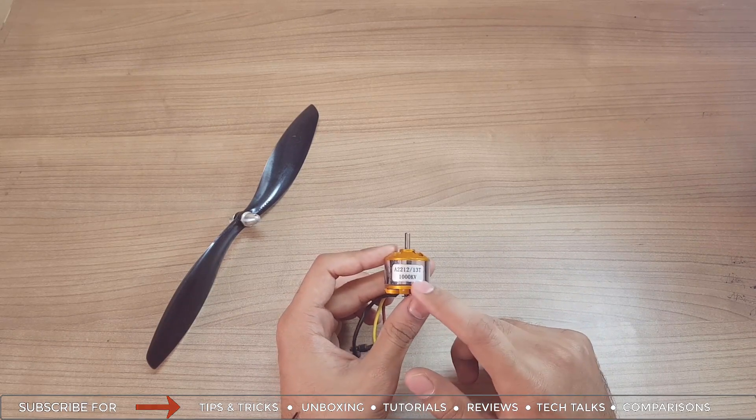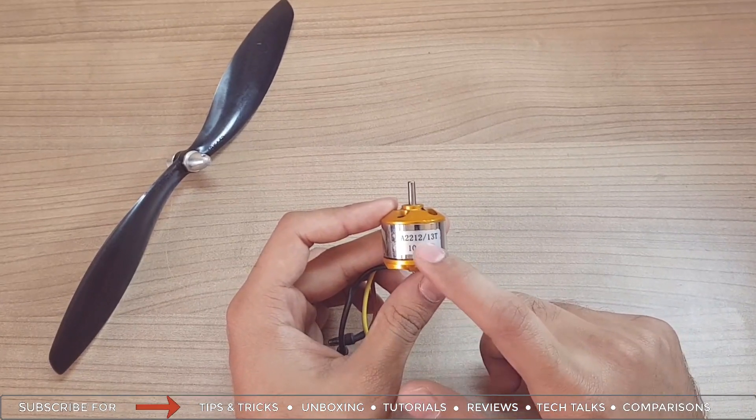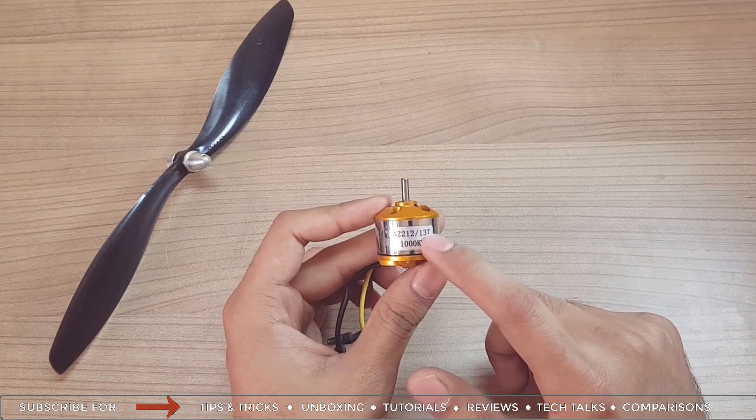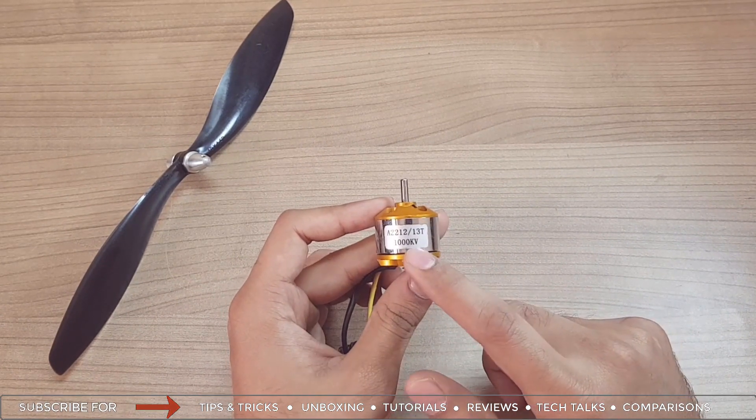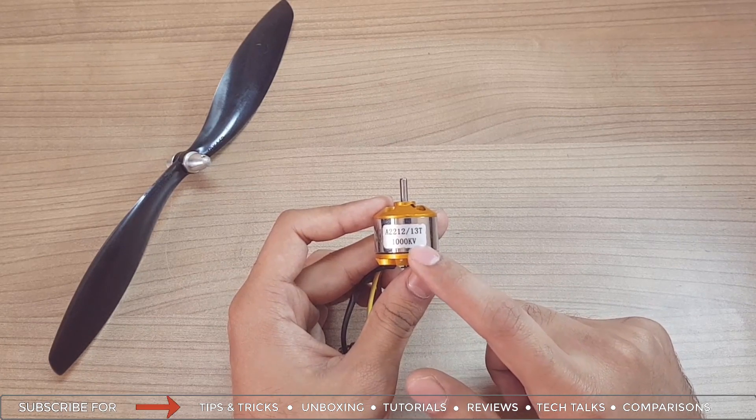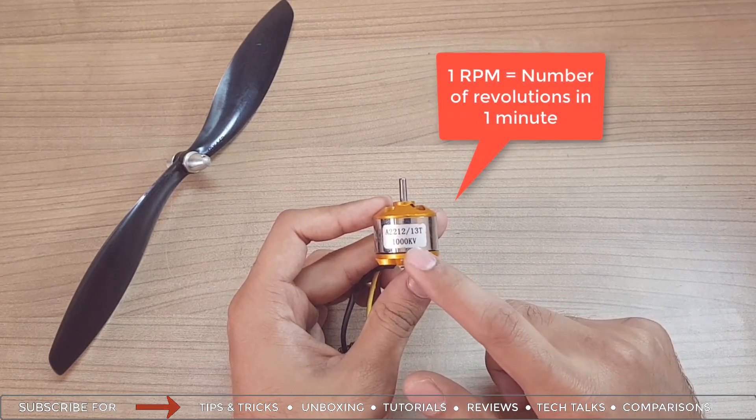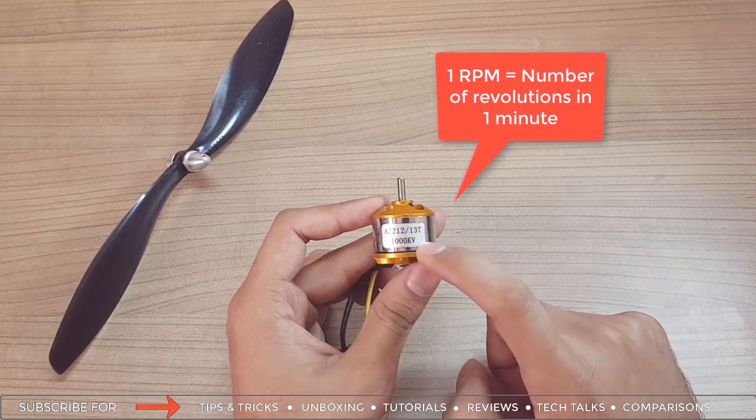Now let's talk about the rating of these motors. Here you will find 1000 KV. This is the size of the motor. 1000 KV can be read not as a thousand kilovolts, but it's the number of revolutions it's gonna make per volt.